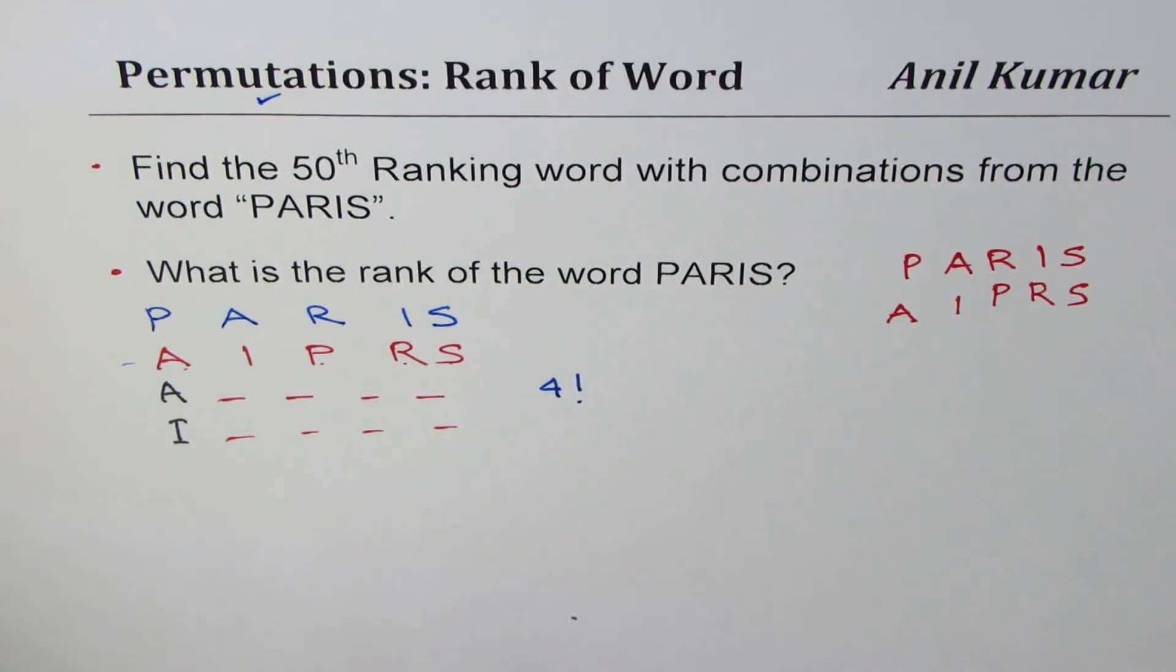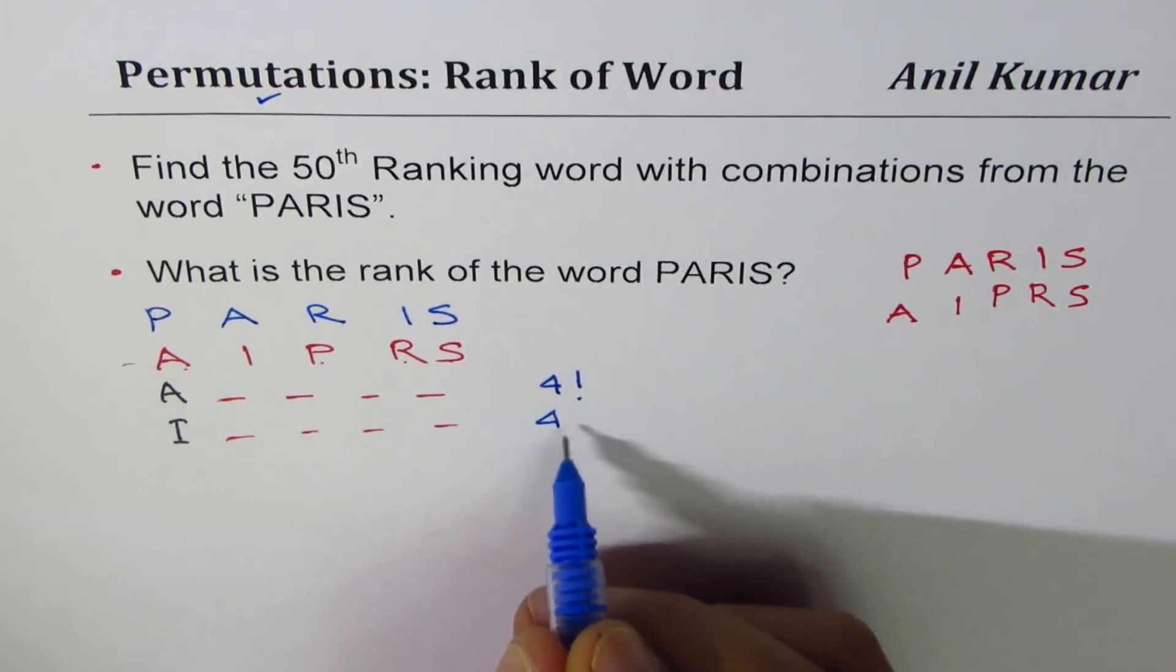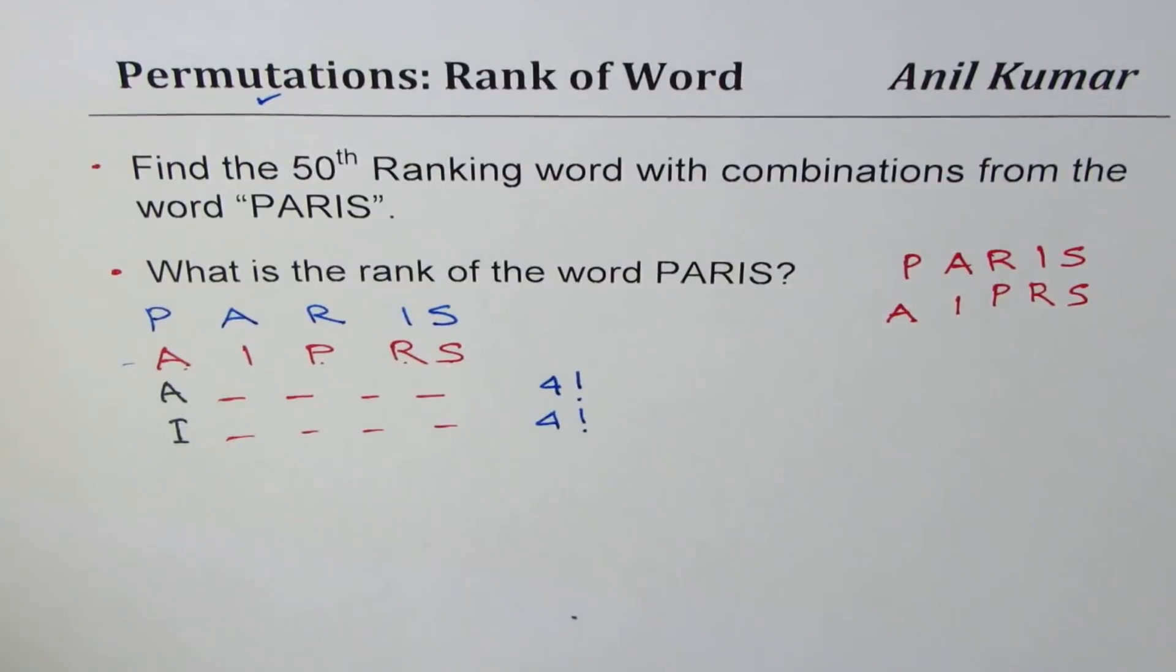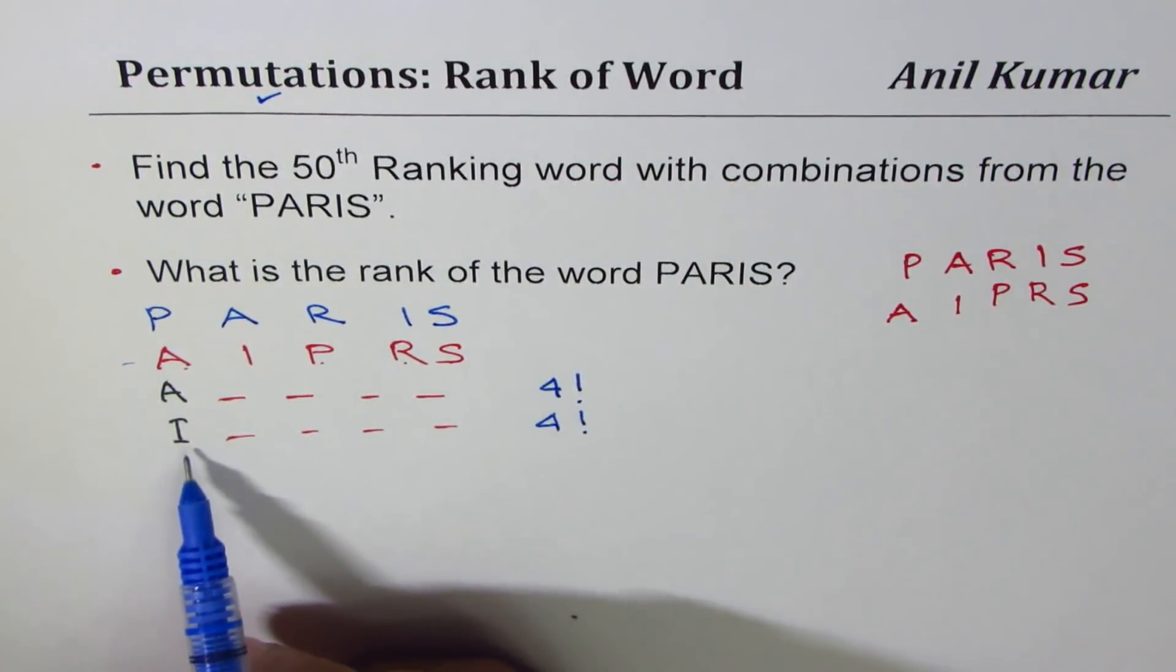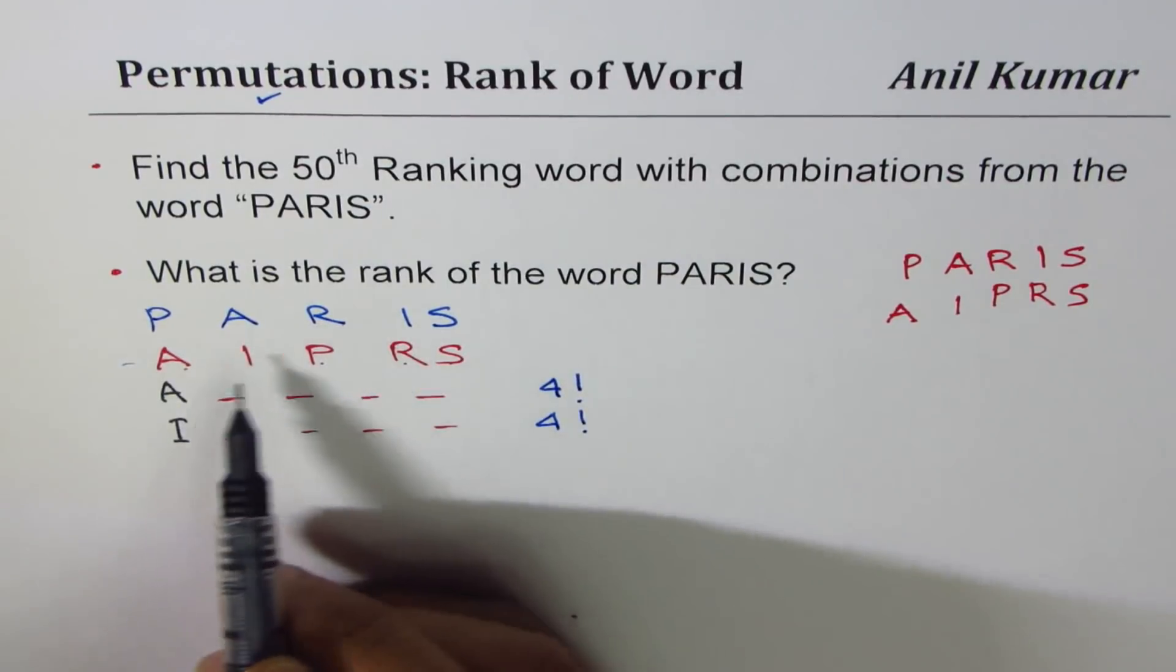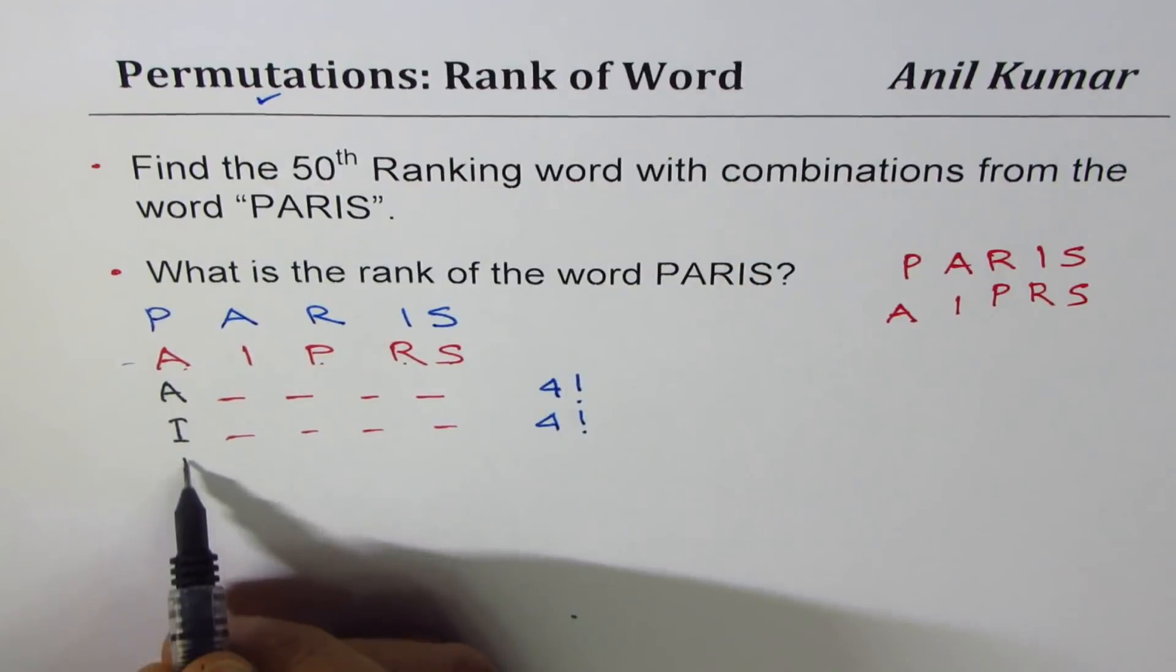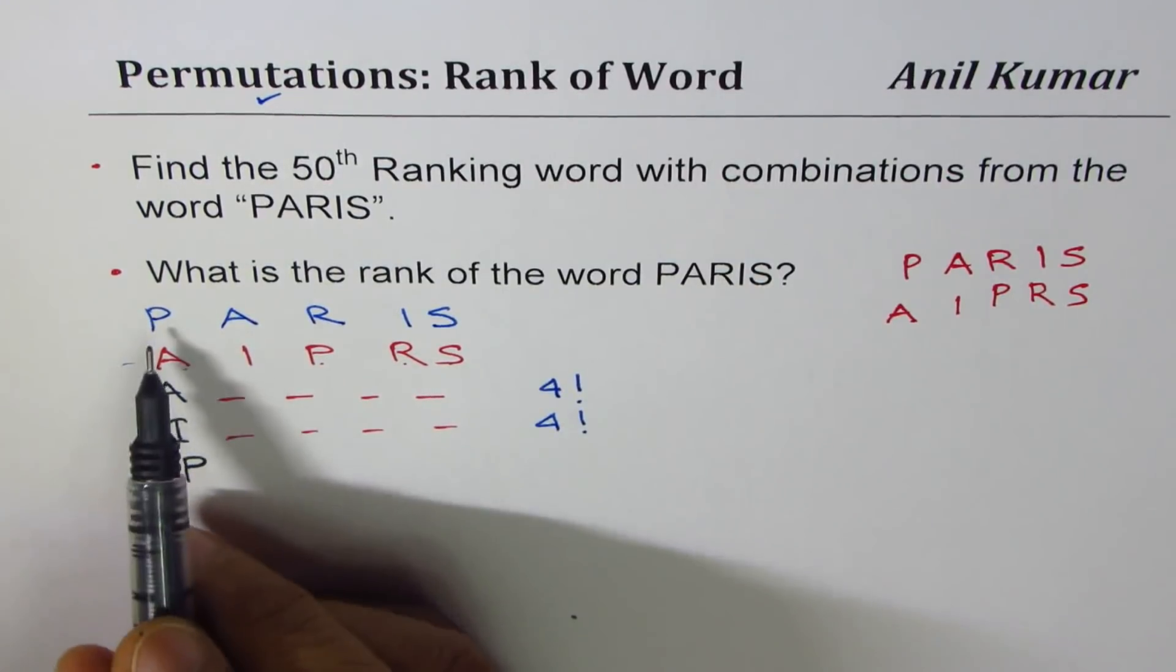And since we are filling in four positions, we have a count of four factorial of the words being formed with first letter as I. Now those all will come before Paris. Next in the list, alphabetical order is P. So as soon as we put P there, that matches.